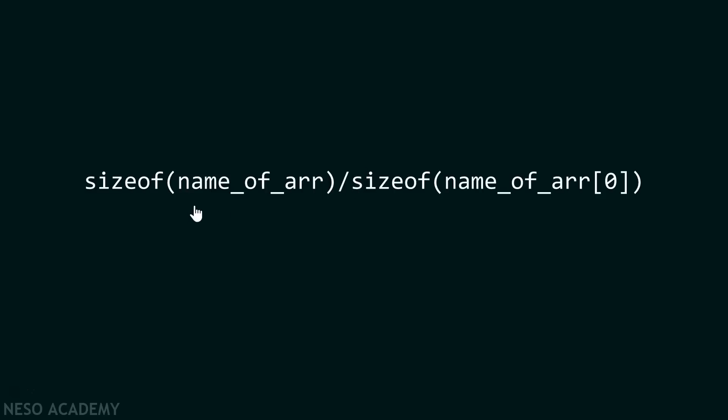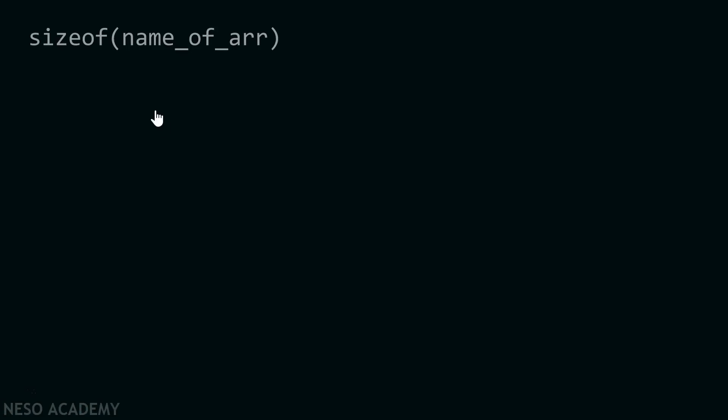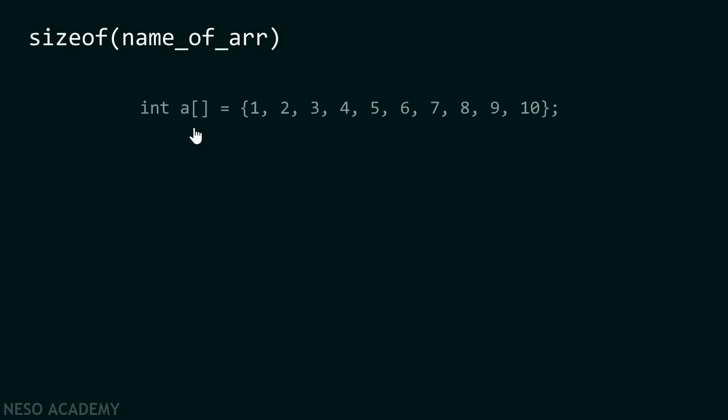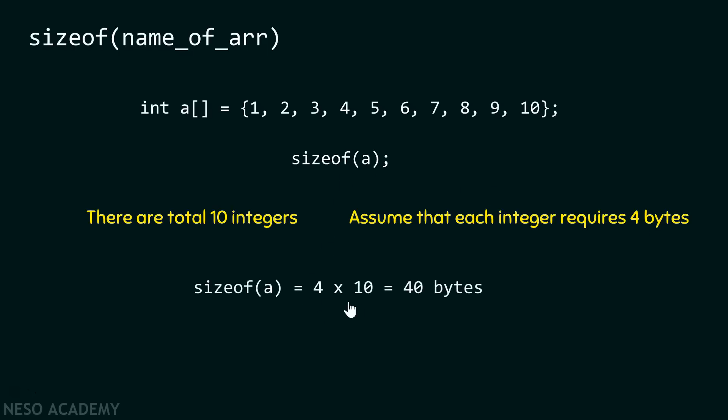Let me explain the first part to you: sizeof name of array. Suppose we have an array like this and there are total ten elements in this array. What is the size of this array? There are total ten integers, right? And I am assuming that each integer requires four bytes. Then we can easily calculate the size of this array by multiplying four with ten. It gives me forty bytes.